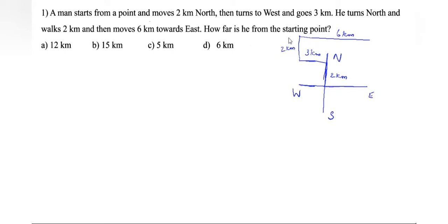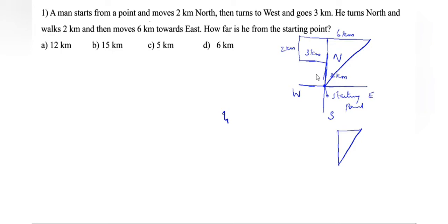How far is he from the starting point? The starting point is here. This is two kilometer and this is two kilometer, so this portion is four kilometer. The full is six kilometers, so this is three kilometer. We want only this portion: six kilometer minus three kilometer — this is three kilometer.